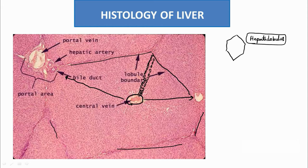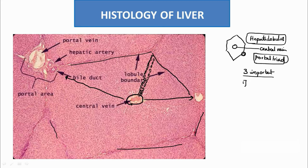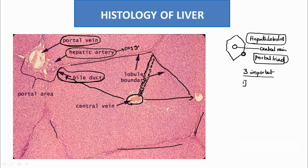The central part is the central vein, and the peripheral part is the portal triad. The portal triad contains three important structures: number one is the portal vein, number two is the hepatic artery, and number three is the interlobular bile duct. The hepatic artery brings oxygenated blood to the liver, and the portal vein brings nutritious blood from the enteric system.